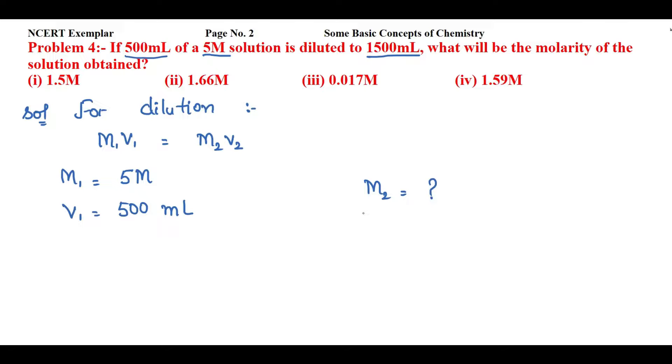Let's put the values. So M1, that is 5 molar, into V1, 500 mL, equals M2 (I will take as it is) and V2 is 1500 mL.